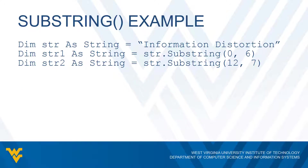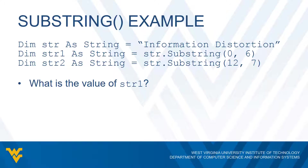What about y? When we call the second indexOf method, what would y contain? We're also looking for 'tion' but now starting at index eleven, which is the space right after 'information'. So the 'tion' in 'information' is not what we're looking for. We start at the space and go onward, and if we look in 'distortion' we see that 'tion' does exist there. The 't' in that 'tion' is at index 18, which means y is going to contain 18.